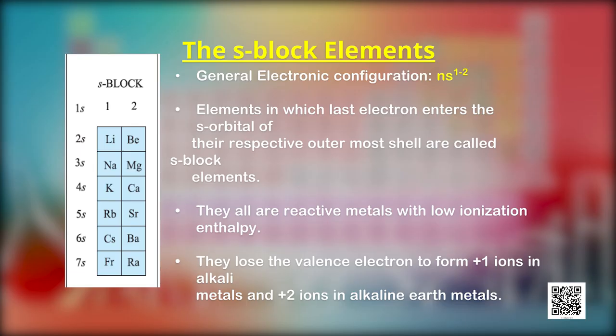Let us briefly discuss the general characteristics of elements in each block. S-block elements are those in which the last electron enters the S subshell — the elements of group 1 (alkali metals) and group 2 (alkaline earth metals), with NS¹ and NS² outermost electronic configurations. They are all reactive metals with low ionization enthalpy. They lose the outermost electron to form +1 ions (alkali metals) or +2 ions (alkaline earth metals). Because of high reactivity, they are never found pure in nature.